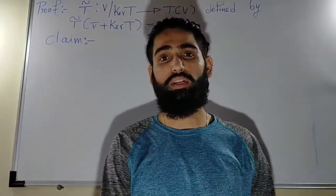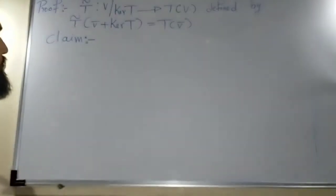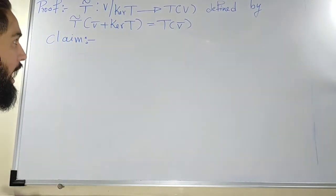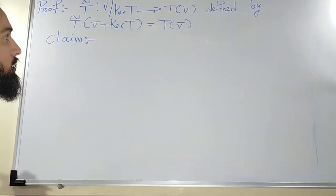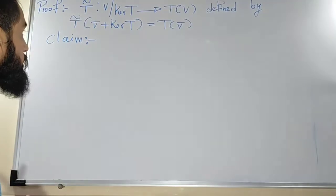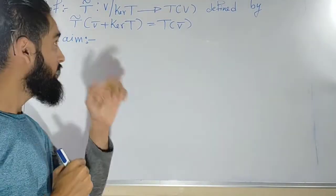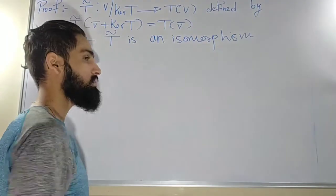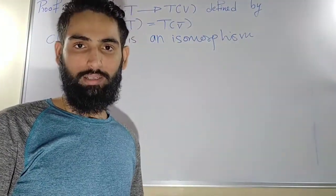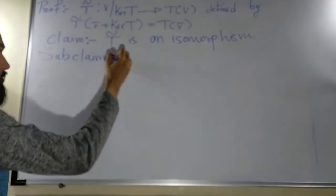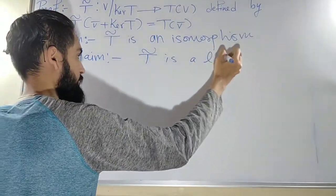Now we'll start the proof. T̃ is defined as a function from V modulo kernel(T) to the range of T, where T̃ takes any coset to the same place where T takes the representative: T̃(v̄ + kernel(T)) = T(v̄). Our claim is that T̃ is an isomorphism. An isomorphism means it is a linear transformation, it is one-one, and it is onto. So we divide the proof into three parts.